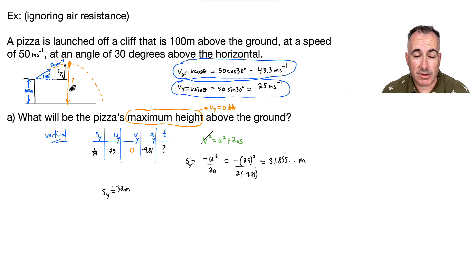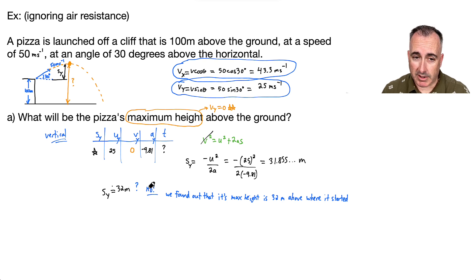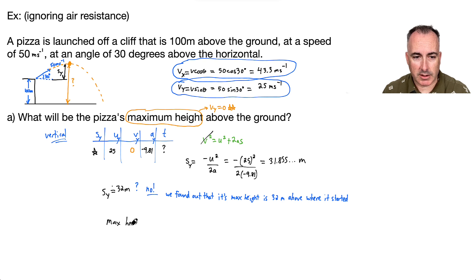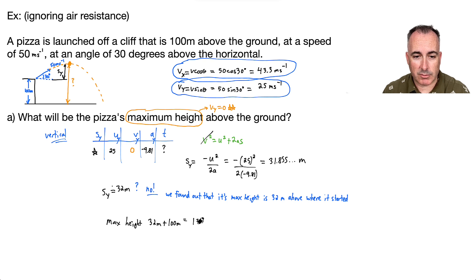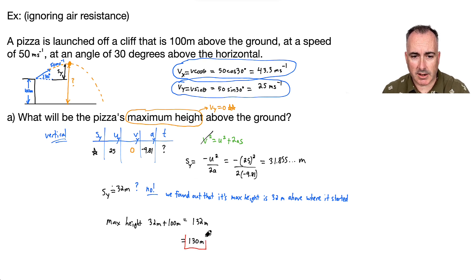I need to add the 100 meters to that, because it already started 100 meters above the ground. So the maximum height is 32 plus 100, which is 132 meters. Rounding to two significant figures — since the given data has two significant figures — the answer is approximately 130 meters.